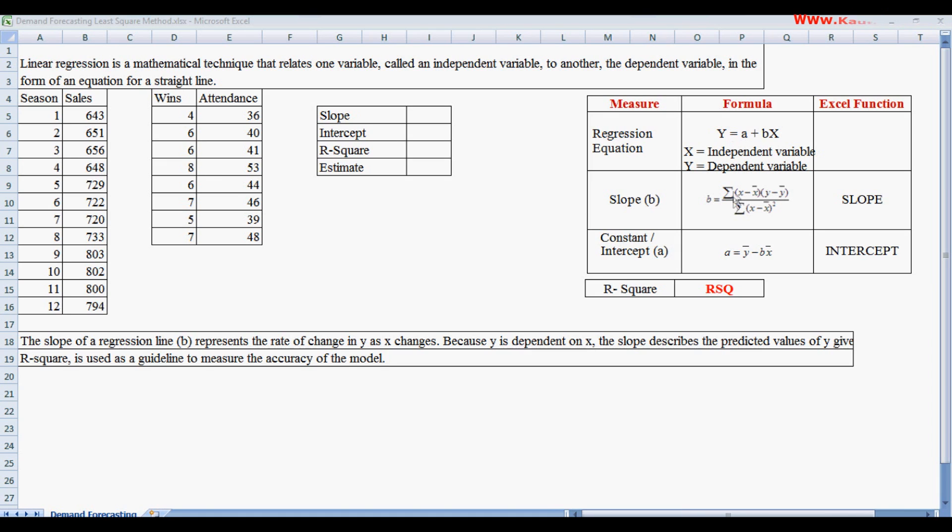To calculate the slope, we use: summation of (X minus X-bar) times (Y minus Y-bar) divided by summation of (X minus X-bar) squared. To calculate the intercept, we use this equation.